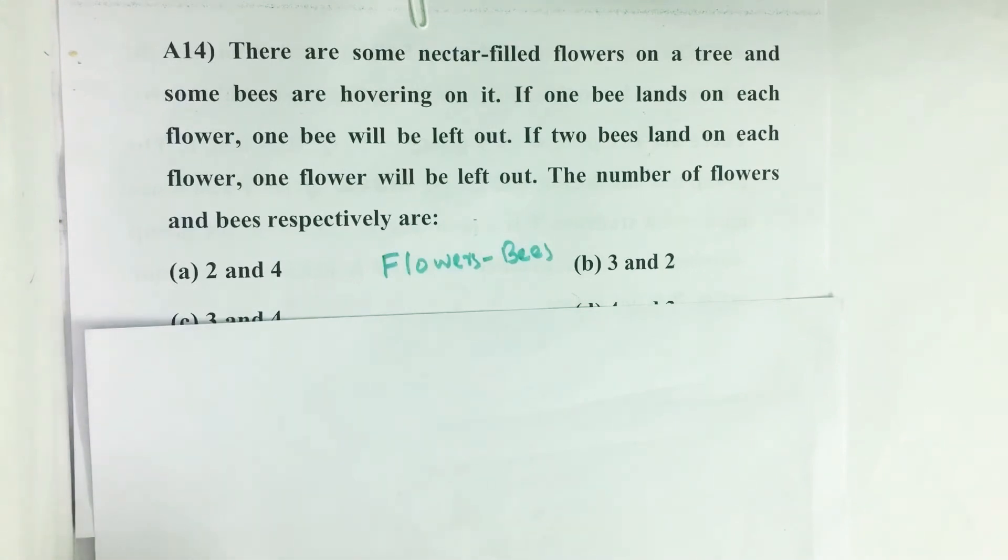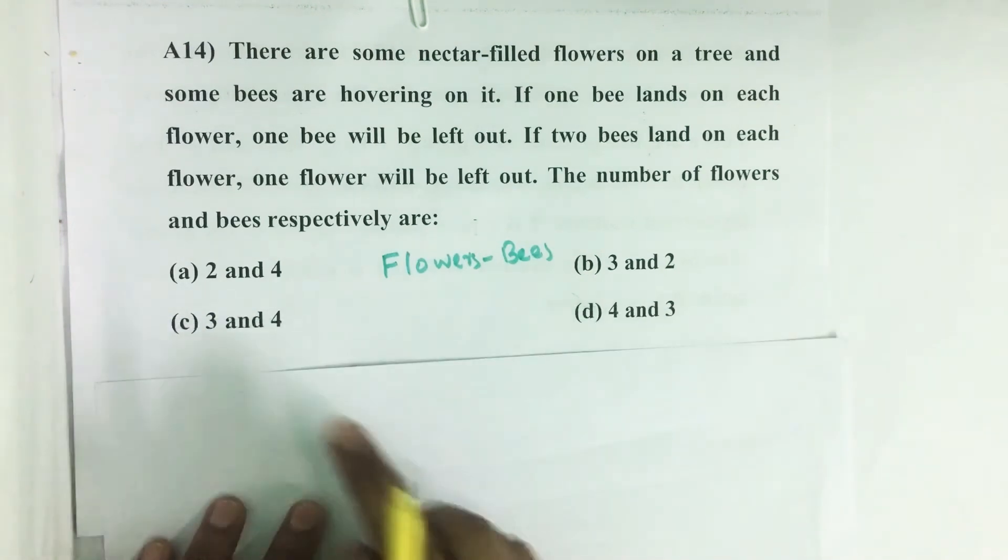There are some nectar-filled flowers on a tree and some bees are hovering on it. If one bee lands on each flower, one bee will be left out. If two bees land on each flower, one flower will be left out. The number of flowers and bees respectively are - so here we have four options.